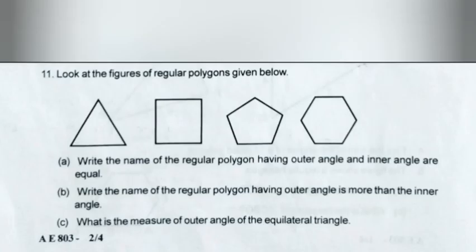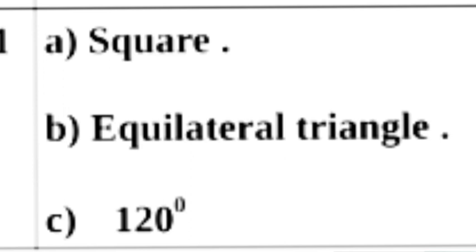Question 11. Look at the figures of regular polygons given below. A. Write the name of the regular polygon having outer angle and inner angle equal. B. Write the name of the regular polygon having outer angle greater than the inner angle. C. What is the measure of the outer angle of an equilateral triangle? Answer: A. Square. B. Equilateral triangle. C. 120 degrees.